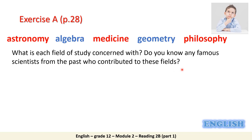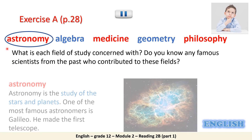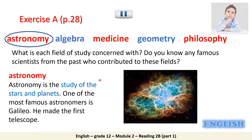Please pause the video now to answer. Astronomy is the study of the stars and planets. Can you name any famous astronomers? Galileo is one of the most famous astronomers from the past and he made the first telescope.